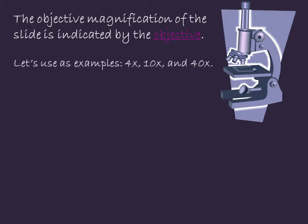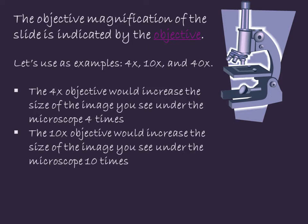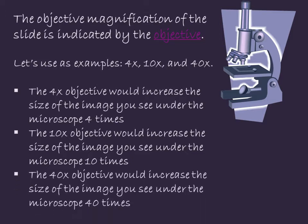For our purposes, let's use 4x, 10x, and 40x objectives. The 4x objective would increase the size of the image you see under the microscope four times. So if an object is 1mm wide, it will appear 4mm wide. The 10x objective increases that size 10 times, and the 40x objective increases the image 40 times.